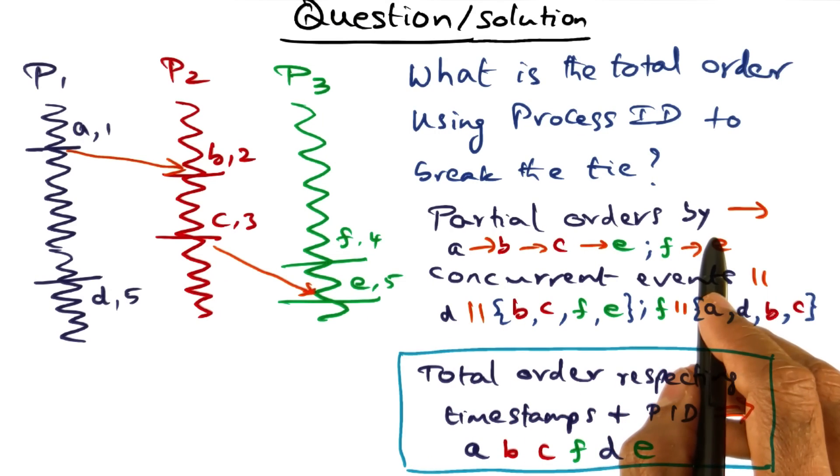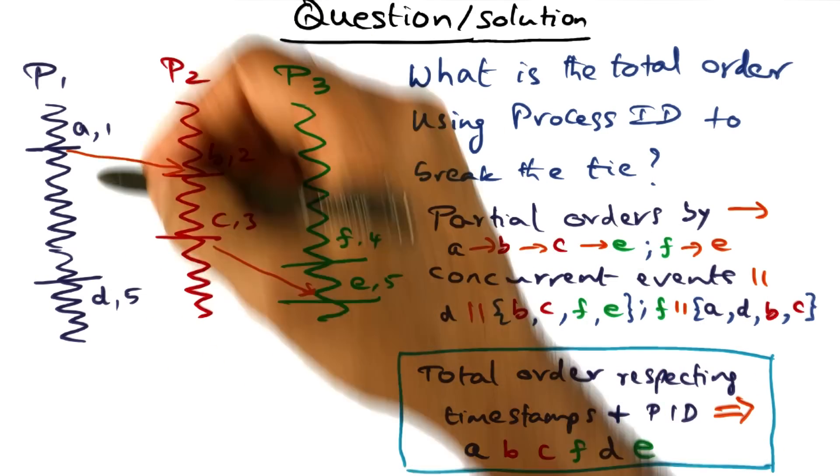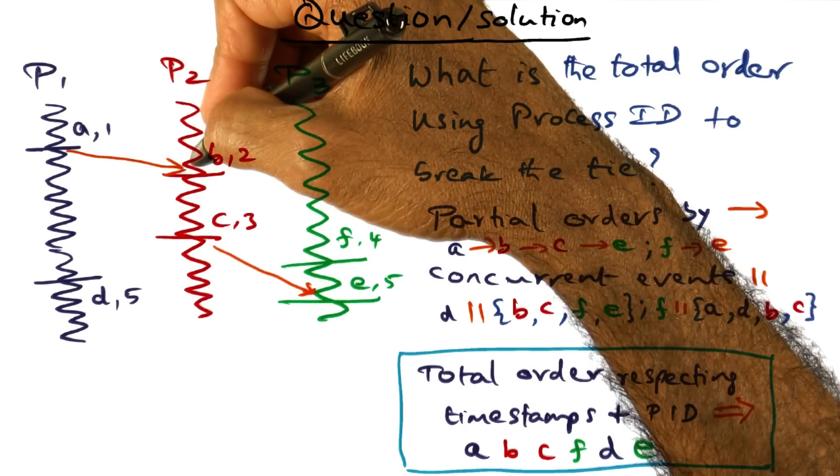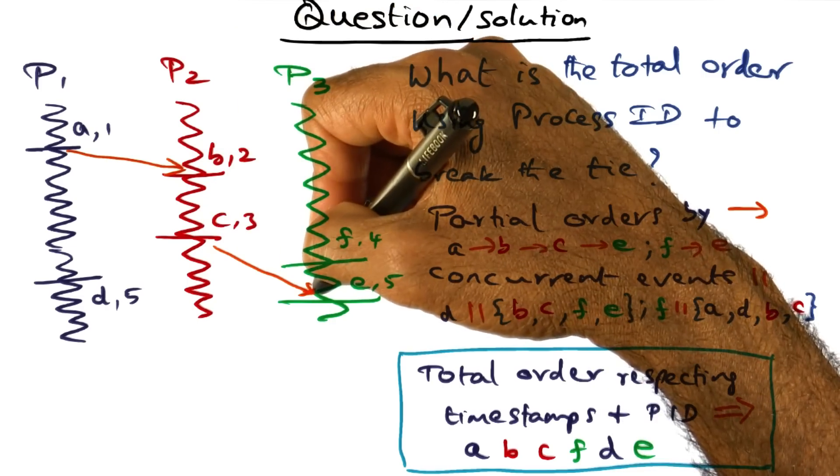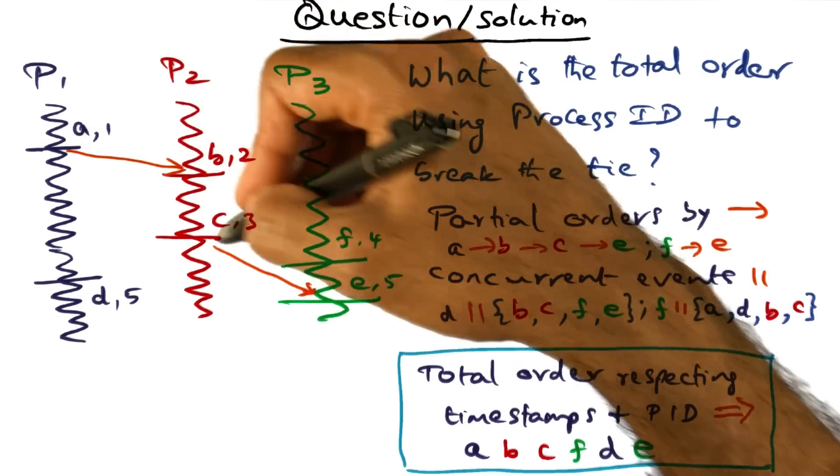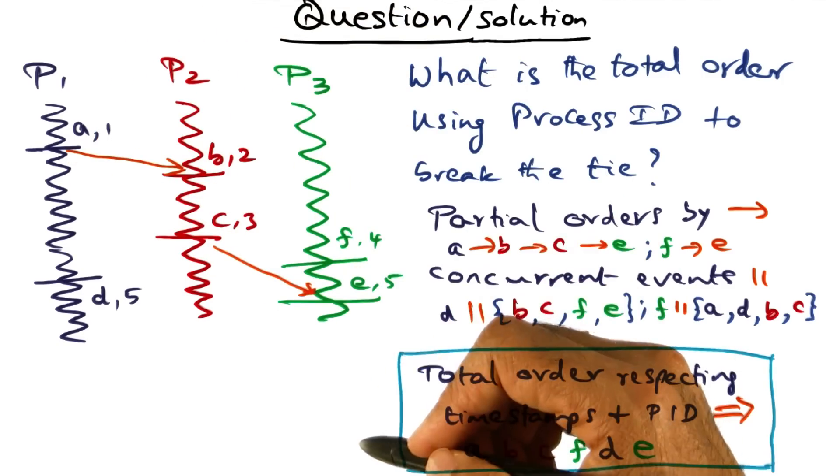So first we can write down the partial orders that we see in the distributed system. You can see that A happens before B, B happens before C, C happens before E. And these are purely coming from the chain of communication and local events that are happening over here.